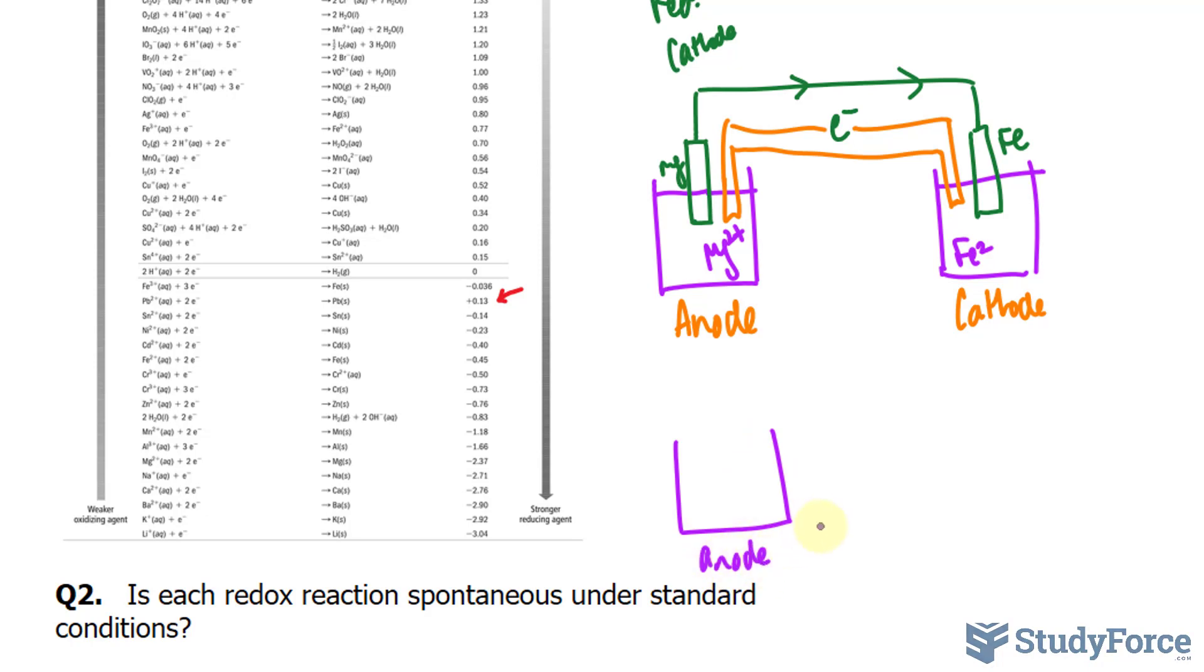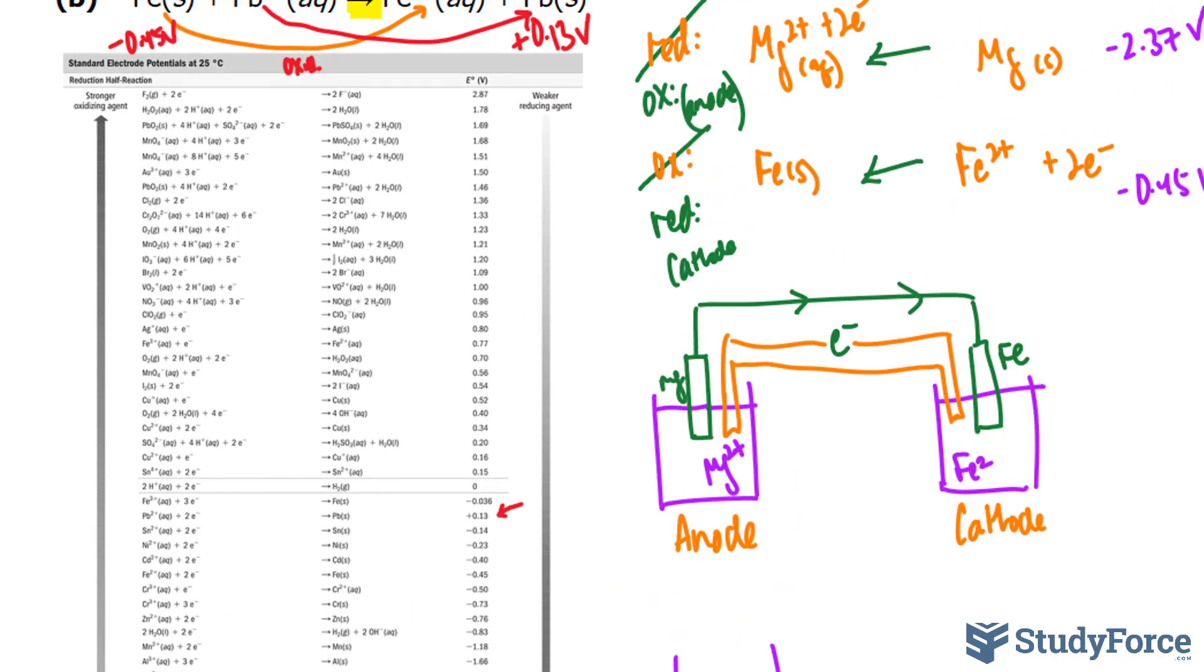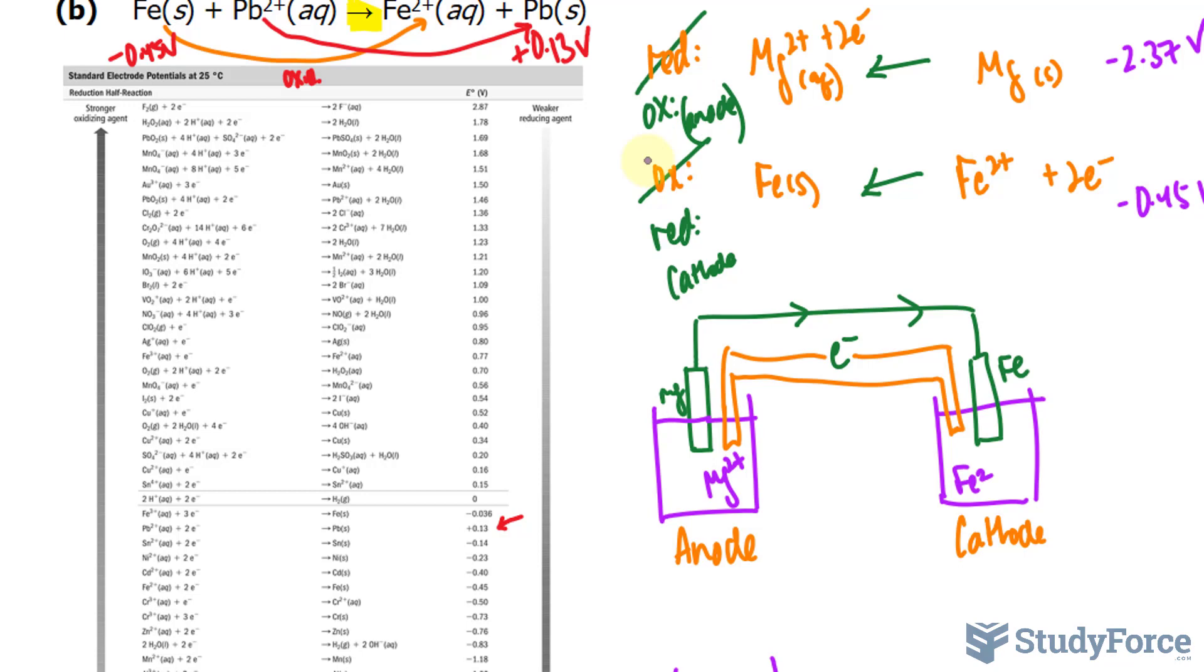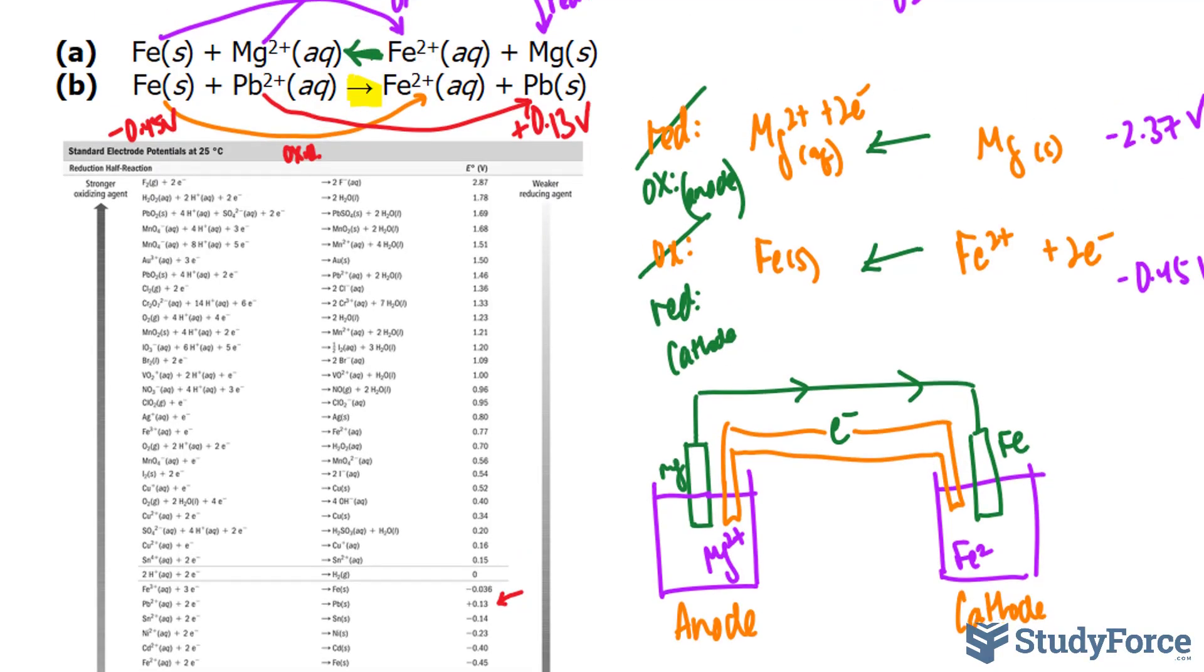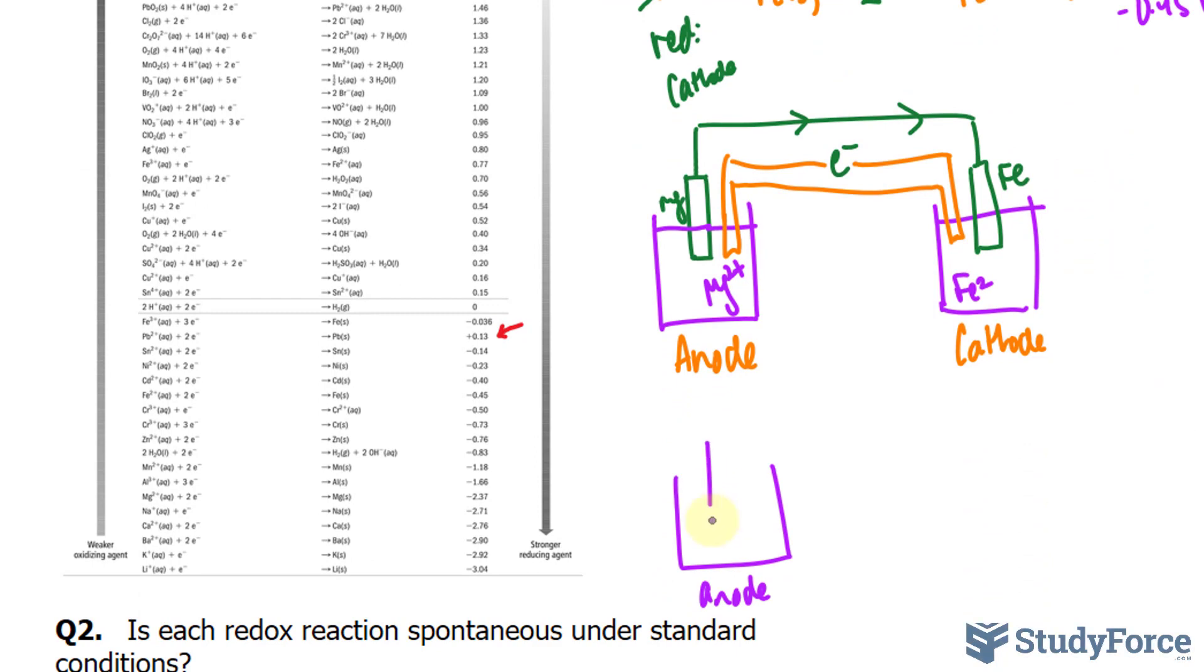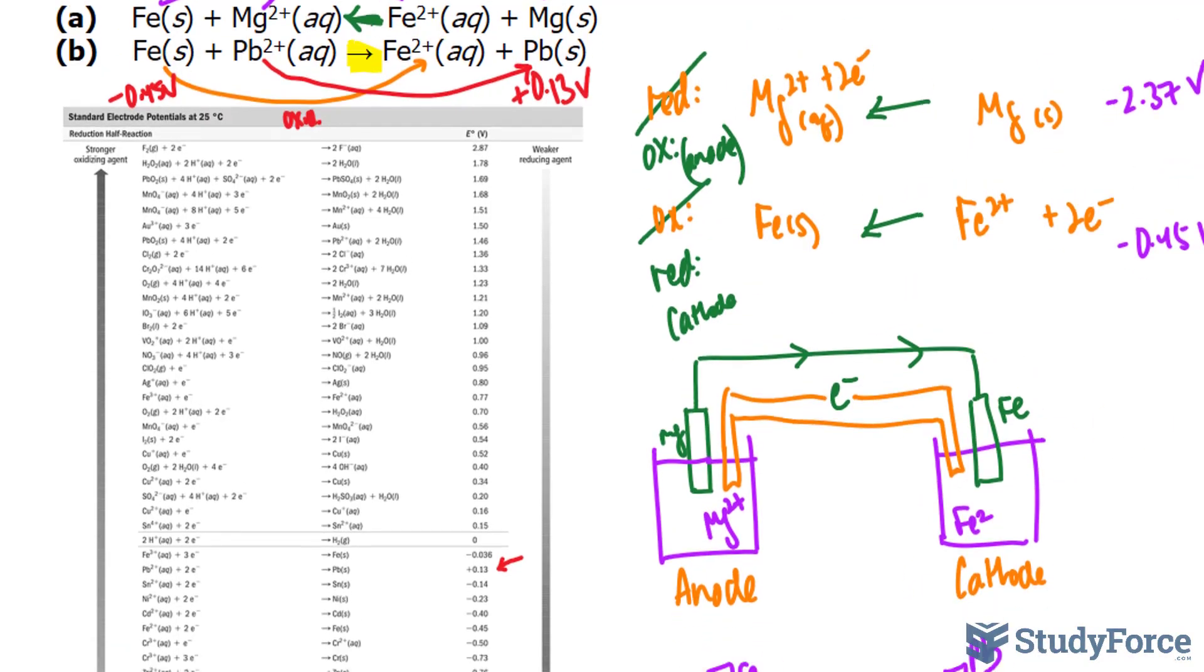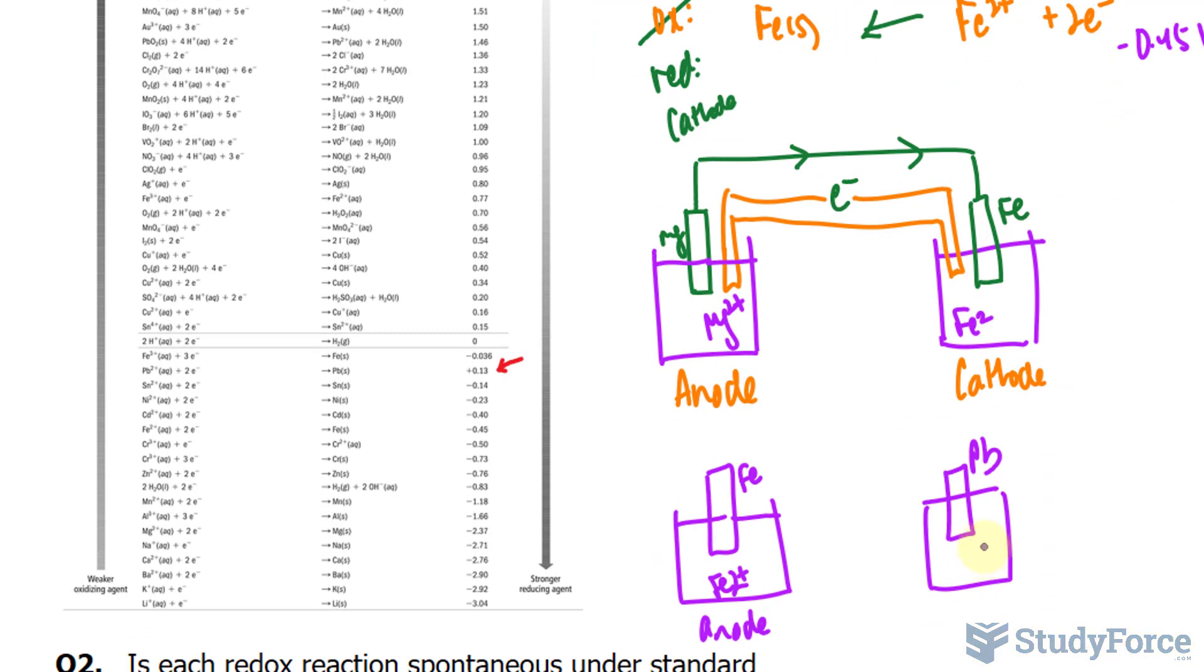Let me do this really quickly. We have the anode on the left side, and remember the anode is always the oxidation reaction. And we determined that the oxidation reaction is iron. So we have solid iron here, and it's floating in iron 2+ ions. And we have lead here, it's floating in its ions, which are 2+ in charge.